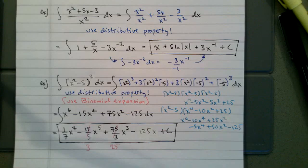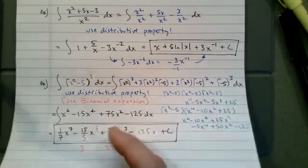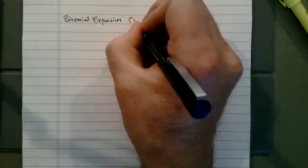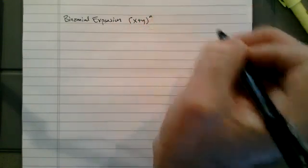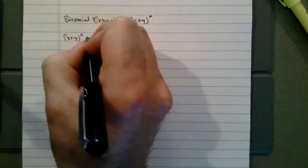Can you explain what you did at the top? I'm not understanding how you get x squared to the third plus three times x squared squared. Up here I'm using a shortcut — the binomial expansion — to multiply everything out. Binomial expansion is taking something like x plus y and raising it to the n power.